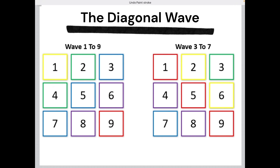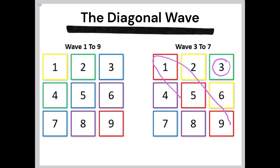Sometimes, though much less commonly, the starting point can be element three instead of element one, meaning the wave starts in the top right corner and goes down to the bottom left corner. In this case, element nine — your missing element — will be identical to elements one and five.